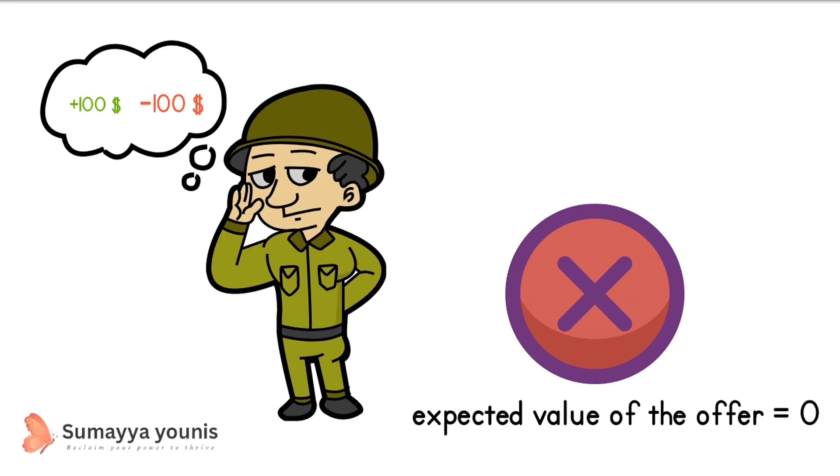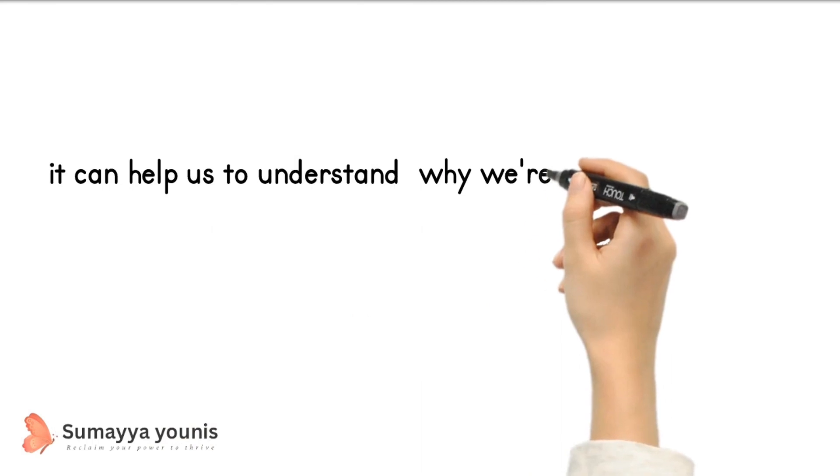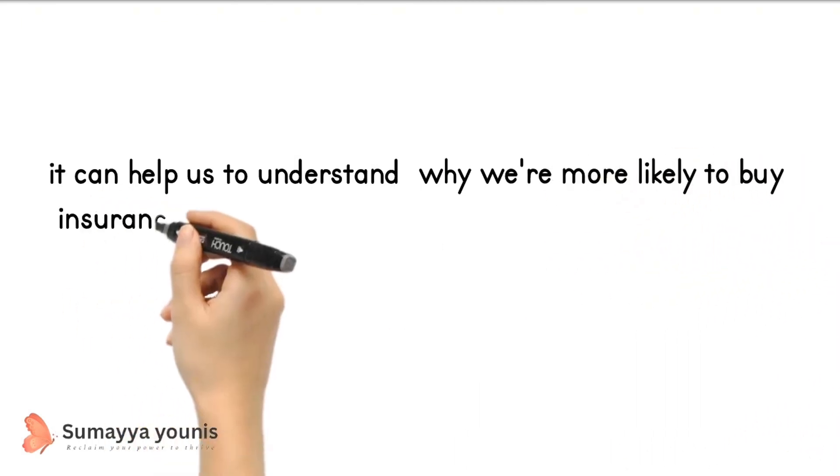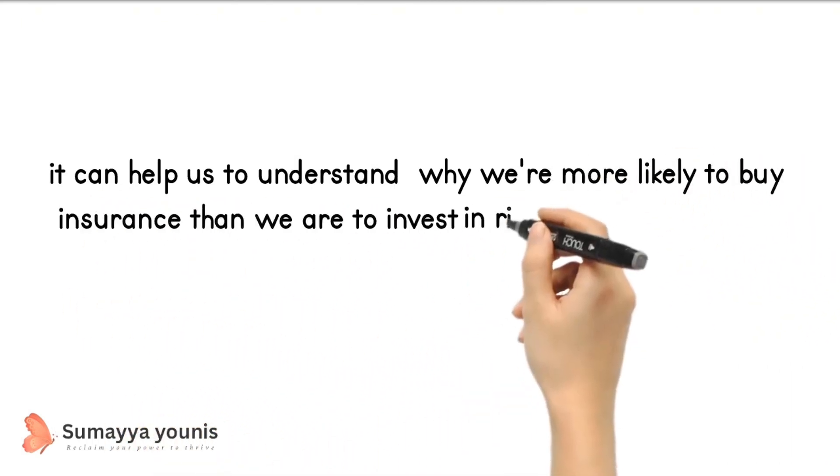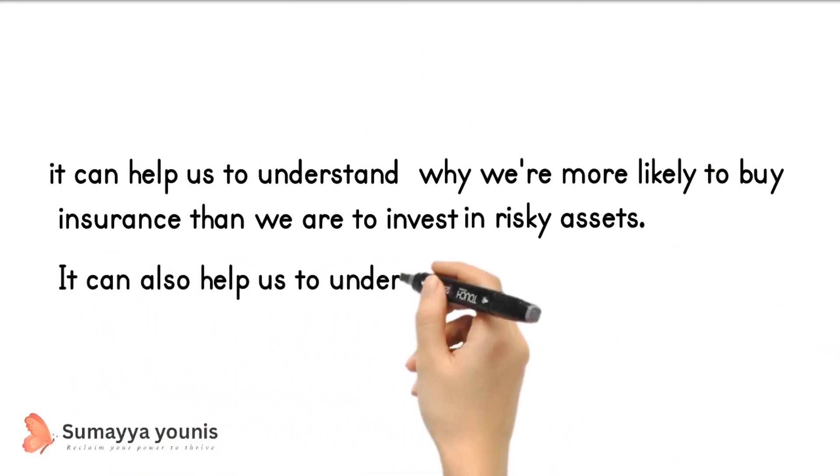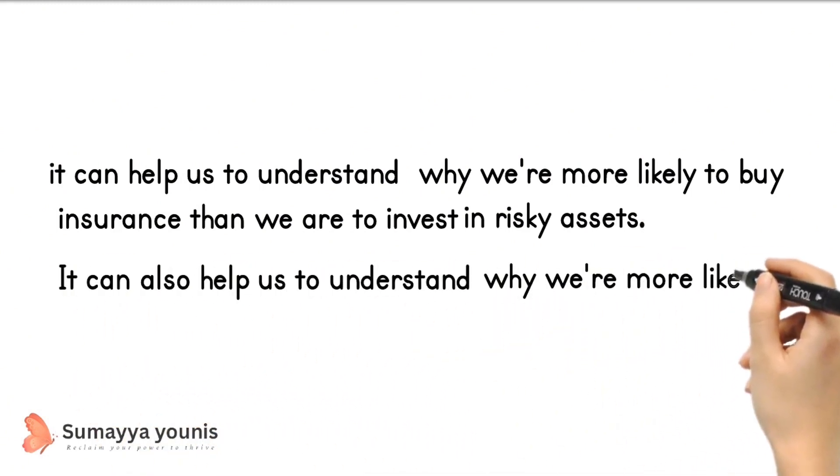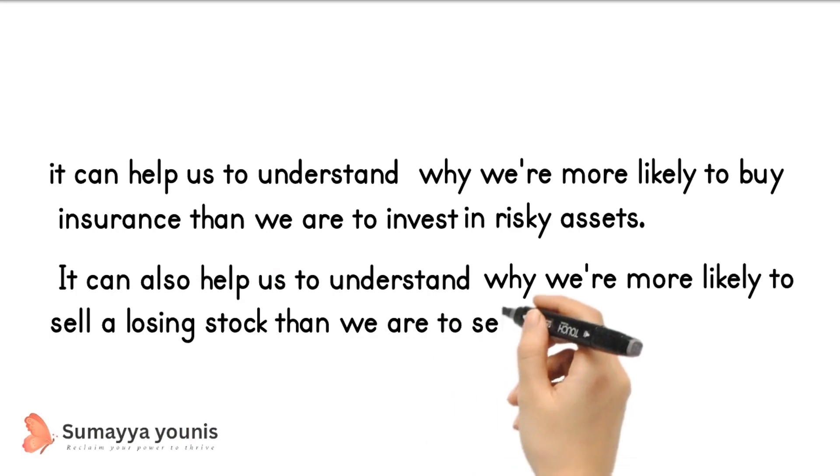Prospect theory has a number of implications for how we make decisions. For example, it can help us understand why we're more likely to buy insurance than invest in risky assets. It can also help us understand why we're more likely to sell a losing stock than a winning stock.